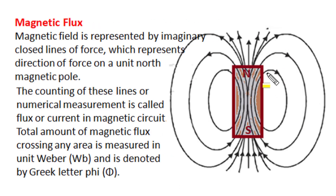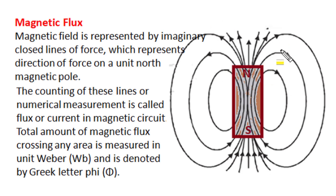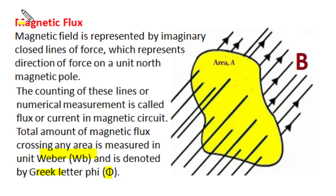The magnetic field in space is represented by these imaginary closed lines of force, which represent the direction of force on a unit north pole at any position. These imaginary force lines are counted, and the counting of these lines is numerically called magnetic flux. Magnetic flux is also treated as current in a magnetic circuit. The total amount of magnetic flux crossing any area is measured in the unit Weber, denoted by the Greek letter Phi (Φ). So magnetic flux is the counting of magnetic force lines, measured in Weber and denoted by Φ.